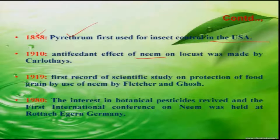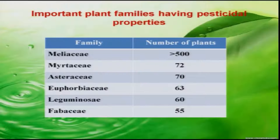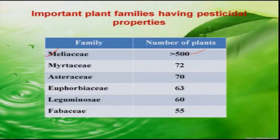Neem acts as an antifeedant, and looking at its importance, much research was conducted during early days. One important international symposium was held in Germany during 1980. The families which contain principal insecticidal components in plants include Meliaceae, which consists of more than 500 plants known to contain principal insecticidal products, and similarly Myrtaceae, Asteraceae, and others.